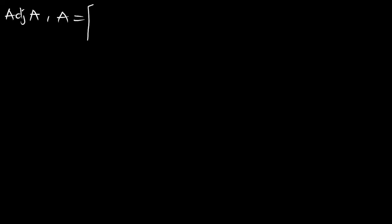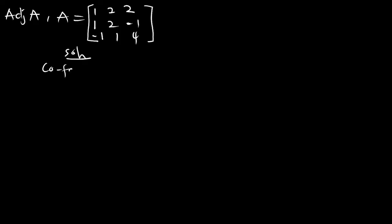Let's take a second example. Find the adjoint of matrix A such that our matrix A is: 1, 2, 2; 1, 2, negative 1; negative 1, 1, 4. Before we get the adjoint we must transpose the cofactor matrix, so first we find our cofactor matrix.